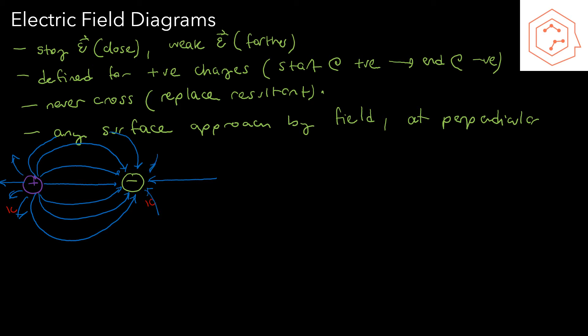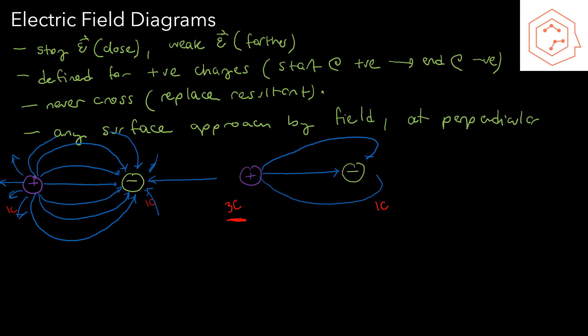If we have a similar system — a positive charge and a negative charge — but this time we have a three-coulomb charge and a one-coulomb charge, the three-coulomb charge is stronger. Our system is going to be more shifted towards the right because everything is going to be repelled more to the right. In the middle we'll still have a straight line going from positive to negative, but the pattern will be shifted and still roughly symmetrical.